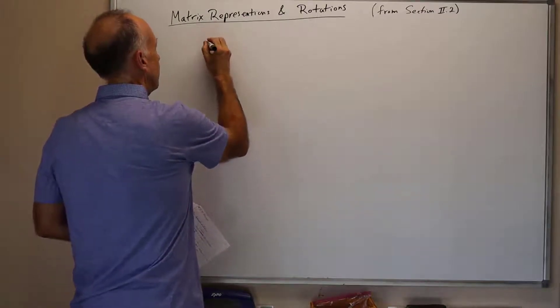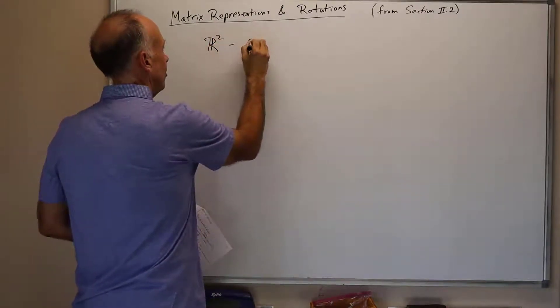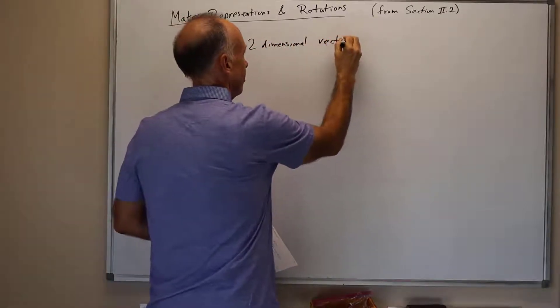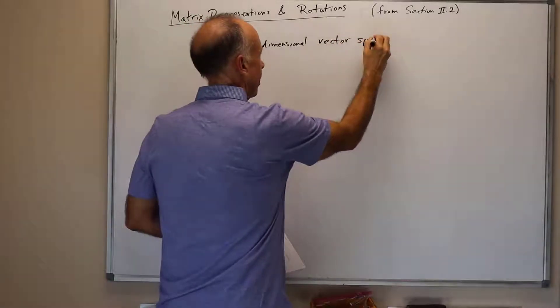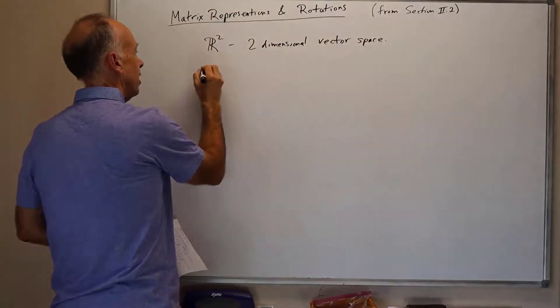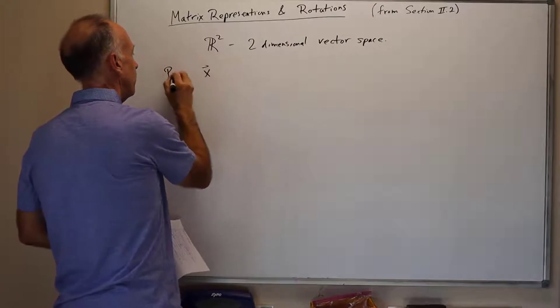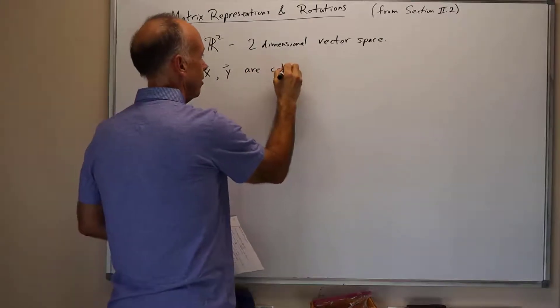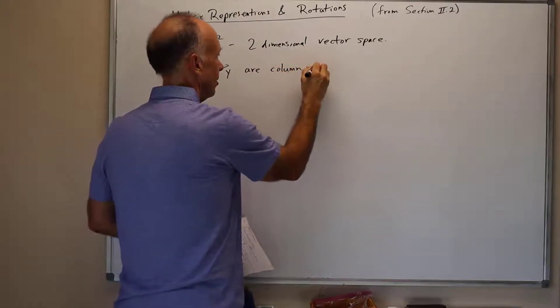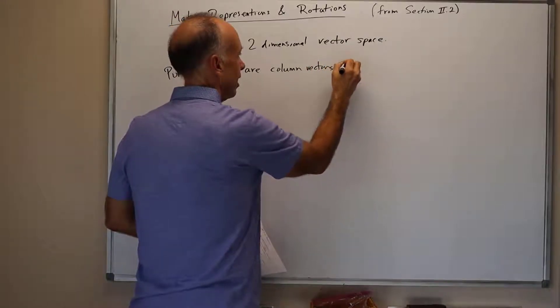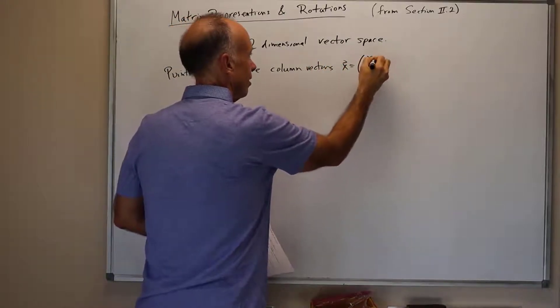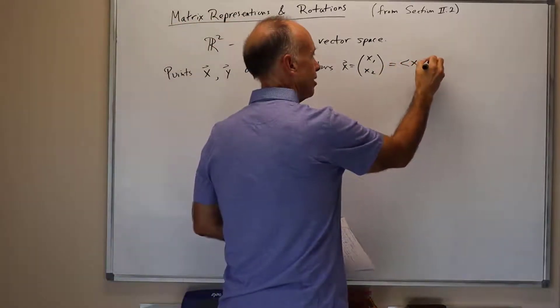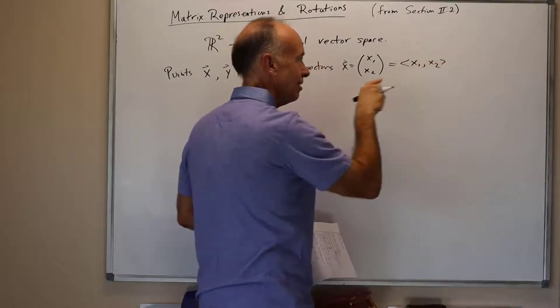We're working in R2, viewing it as a two-dimensional vector space over the reals. Our points, which we denote with vector signs, are column vectors, members of this two-dimensional vector space. We might have x as the column vector x1, x2. We also use the notation with angle brackets: angle bracket x1, x2.